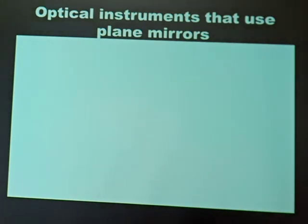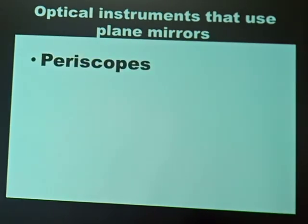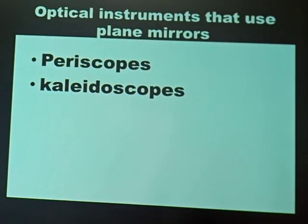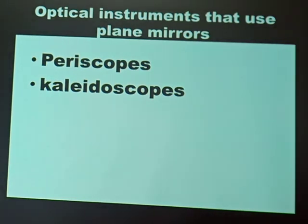Let us go to the last part of this lesson: optical instruments that use plain mirrors. An optical instrument is an instrument that uses light in order to work. The major optical instruments that use plain mirrors are periscopes and kaleidoscopes. In our next lesson, we shall look at periscopes and kaleidoscopes in detail. Thank you very much for listening, and I wish you well. Stay safe.